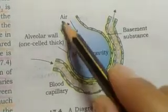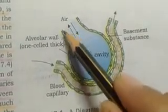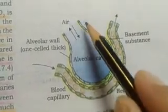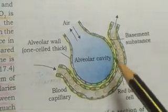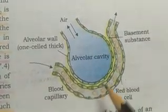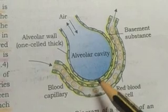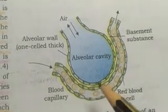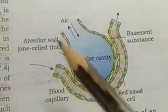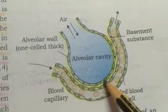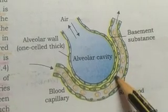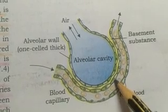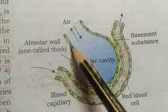And this is a single alveoli, which is also lined by a squamous epithelium. As you know, the lining of the alveoli is made up of squamous epithelium. And you know that in epithelium, the cells rest on a basement membrane. So, the basement membrane is associated with the squamous epithelium.